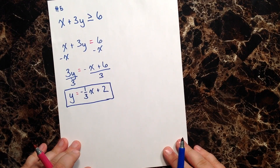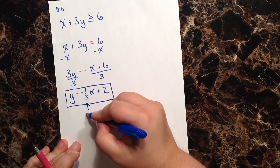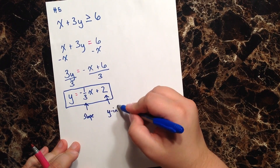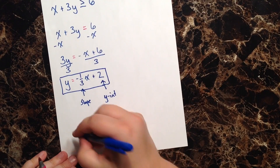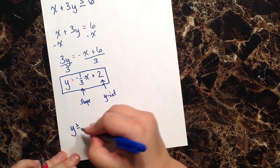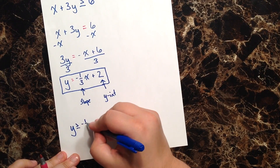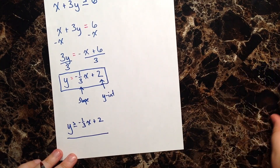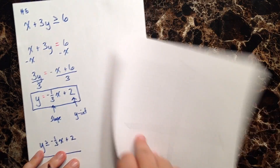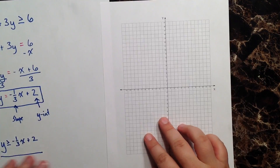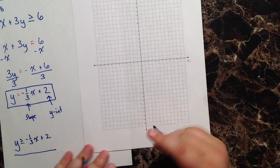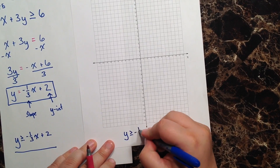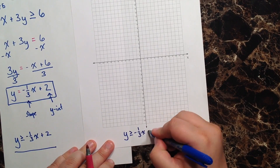Now that I've converted the equation from standard form to slope-intercept form, I can graph this line without any problems because I have my slope and my y-intercept. Let's rewrite the equation using our inequality sign as a point of reference: y ≥ -1/3 x + 2.